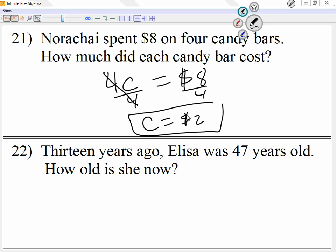Now, looking at number 22, 13 years ago, Elisa was 47 years old. So if I'm thinking of Elisa, because this is how old is she now, I'm going to say she is E many years, because I don't know. So I'm going to use E for Elisa. 13 years ago, that means minus 13. All right, she is E right now, minus 13. It was 47.